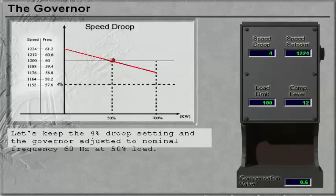Let's keep the 4% droop setting and the Governor adjusted nominal frequency 60 Hz at 50% load.